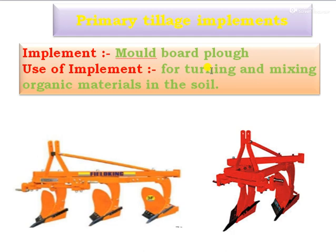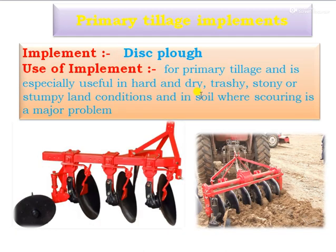Then this is a moldboard plough. This is used for turning and mixing of organic materials into the soil. Next one is the disc plough. This is primarily used for primary tillage operations, and is especially useful for hard and dry, trashy, stony, or stumpy land conditions.